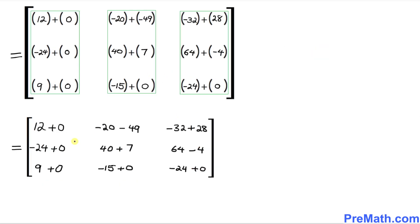Here is the matrix after removing these parentheses. The first entry is 12 plus zero. The next entries, after removing parentheses, simply become negative 20, negative 49, and so on. Pretty much we are done — now we just simplify by adding the numbers in this matrix.